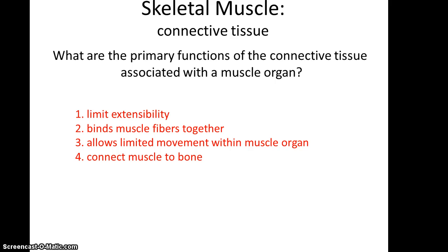What are some of the primary functions of this connective tissue? Obviously, it helps to connect muscle to bone. Also, it limits extensibility, because the muscles can stretch but only to a point. It helps bind the muscle fibers together within the muscle organ, and it also allows for limited movement within the muscle organ. This is important because not all of the cells in the muscle organ contract at the same time or to the same extent, so they're able to rub against each other a little bit without causing damage.